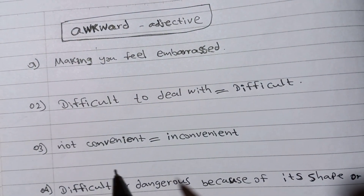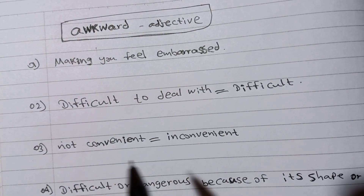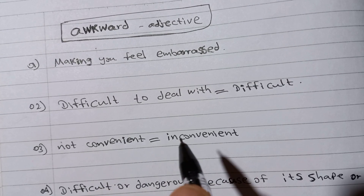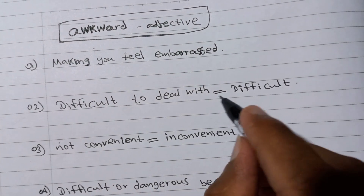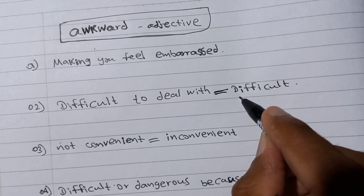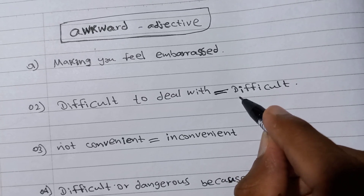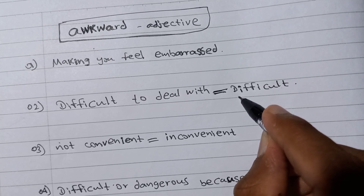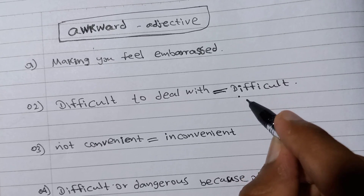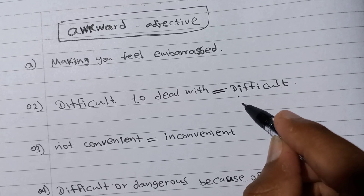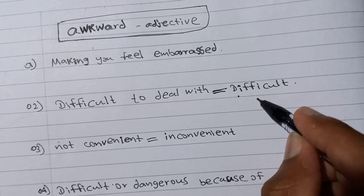The second meaning is difficult to deal with. Awkward means difficult to deal with. Actually, the synonym is difficult. It is an adjective also — difficult to deal with.